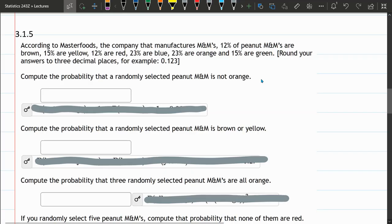This question is going to be tricky. Now in this, we have a bunch of M&Ms, and they tell us the percentages that are brown, yellow, red, blue, orange, and green.